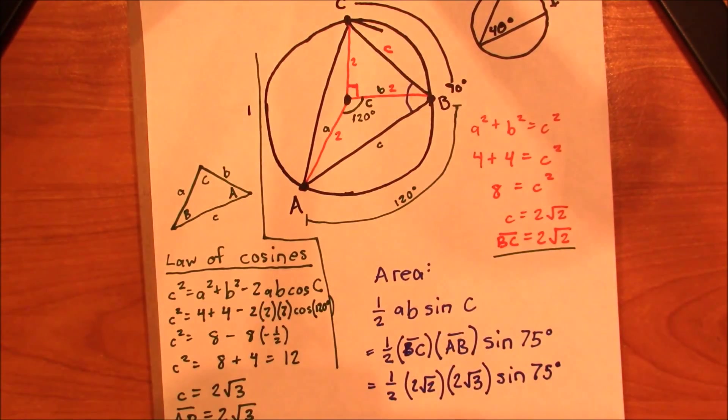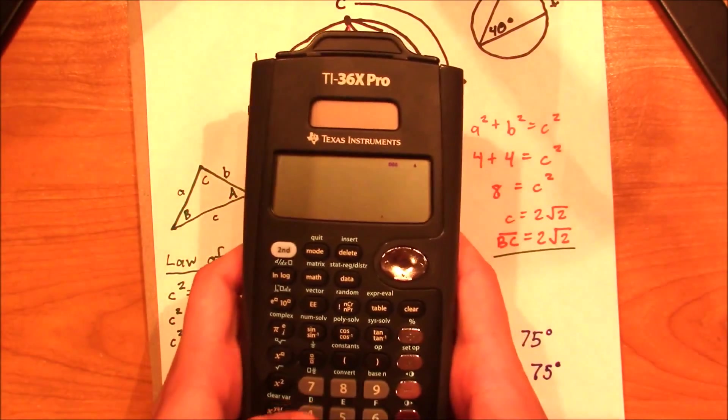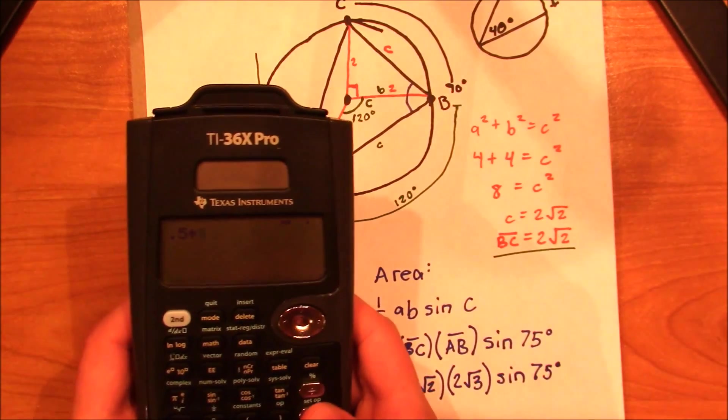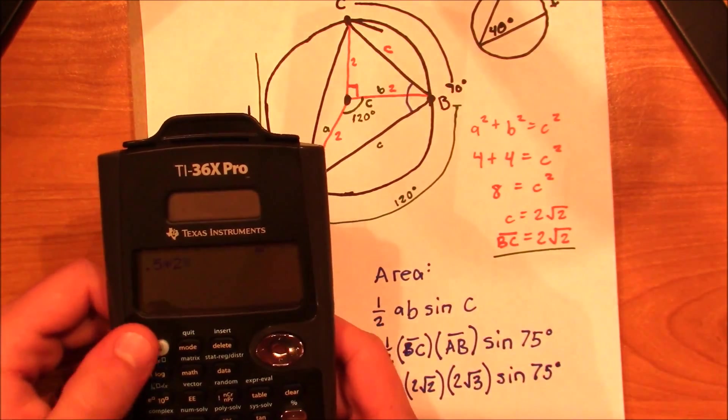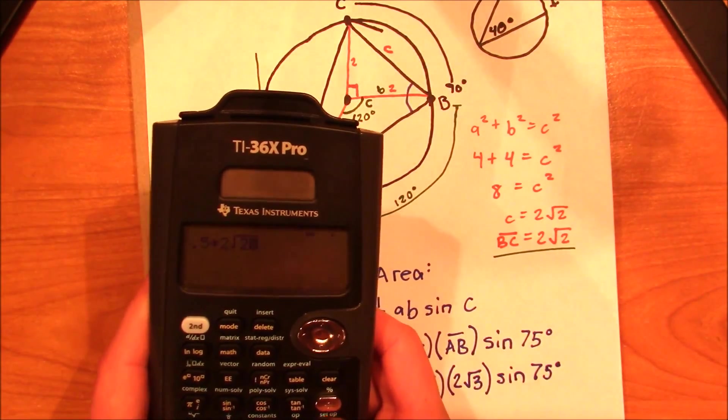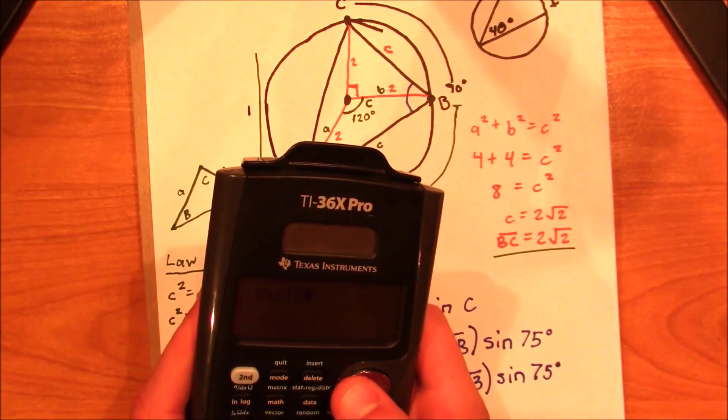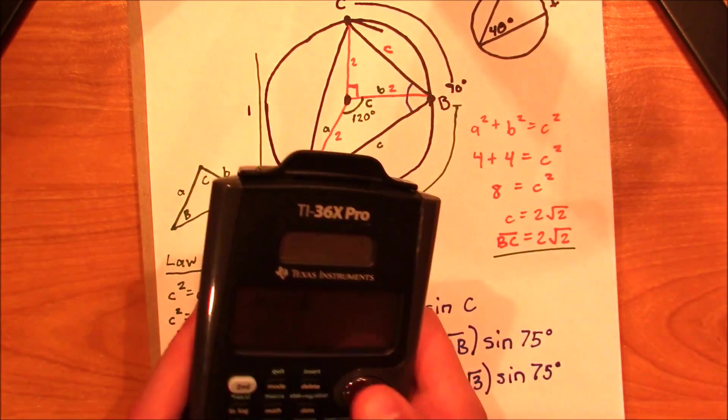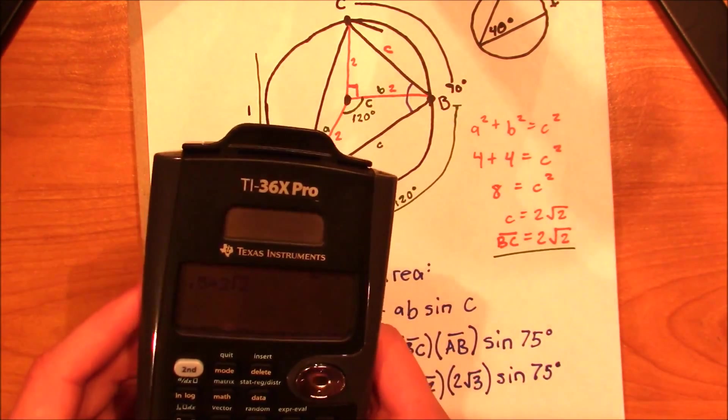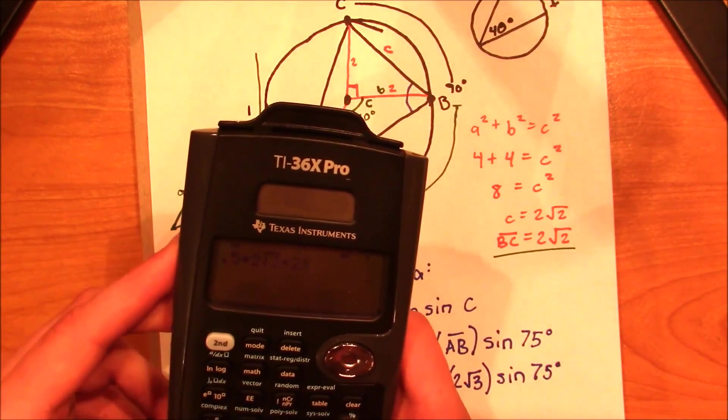I'm going to get 0.5 times 2 root 2 times 2 root 2.